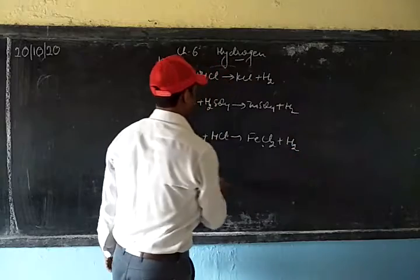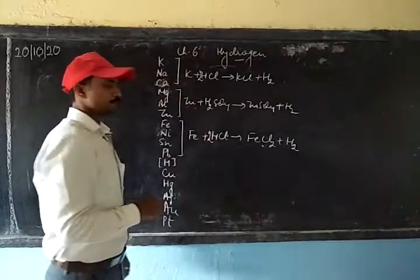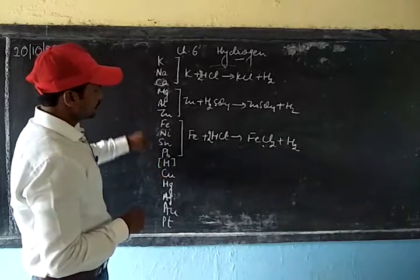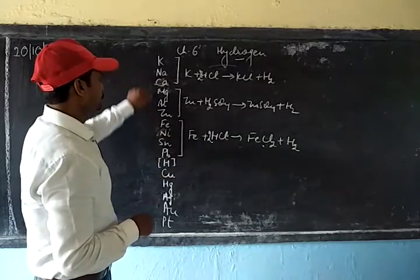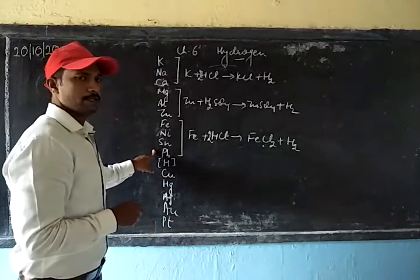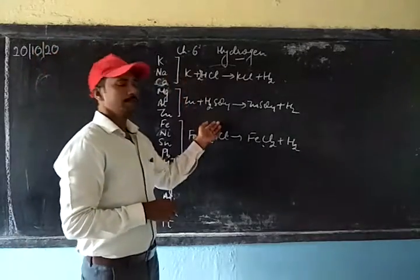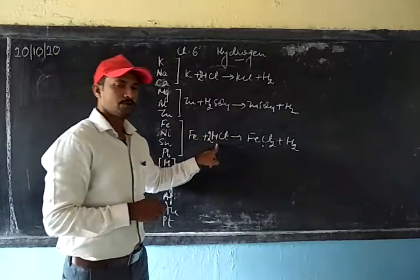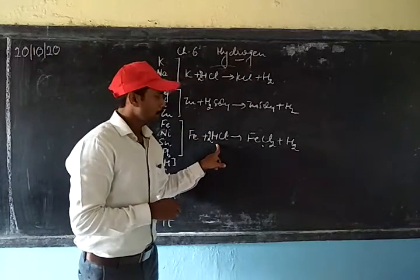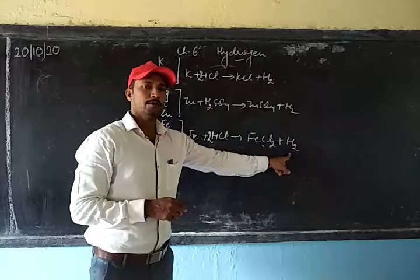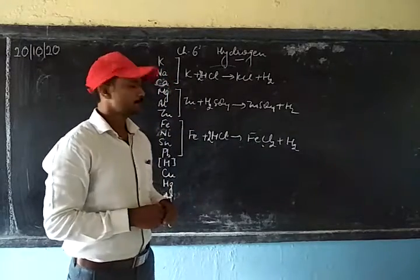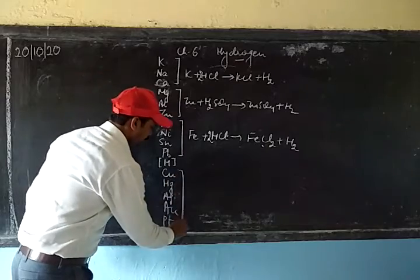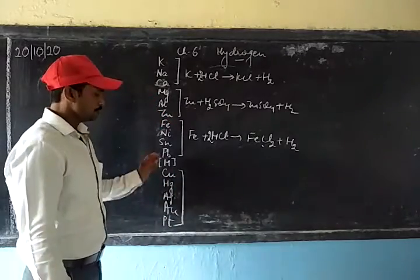For metals like iron, their reaction will be very slow — for example, Fe + HCl produces hydrogen gas. All these metals, since they are above hydrogen in the reactivity series, will react with acid to give hydrogen gas, because these metals can easily displace hydrogen from the acid, and hydrogen is released in the form of hydrogen gas.